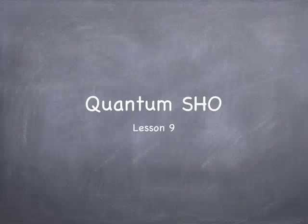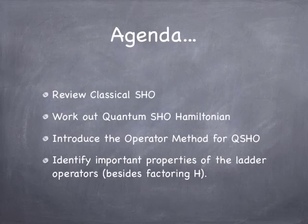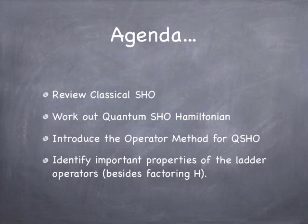Hello again, it's time for lesson 9. Today we're going to study the quantum simple harmonic oscillator. First we're going to review the classical oscillator, then we'll work out the quantum Hamiltonian, then we'll talk about the operator method for solving the quantum simple harmonic oscillator. This operator method produces things called ladder operators, and we'll figure out a couple of nice features of those. This is just the beginning of a two-part session on the quantum simple harmonic oscillator, so there will be more next time.